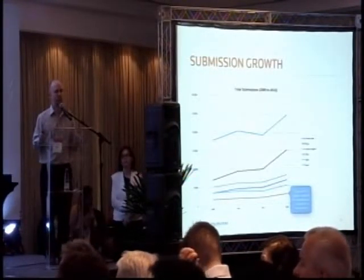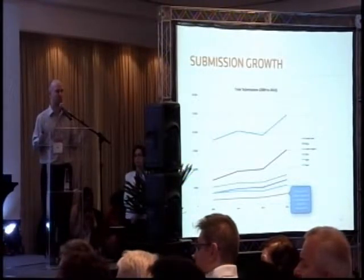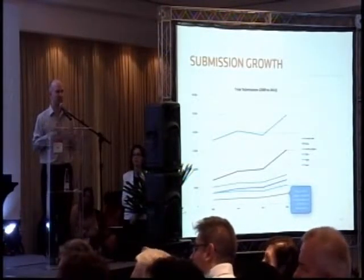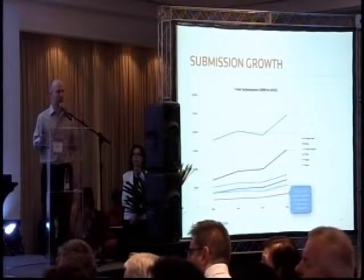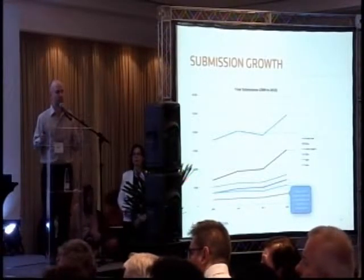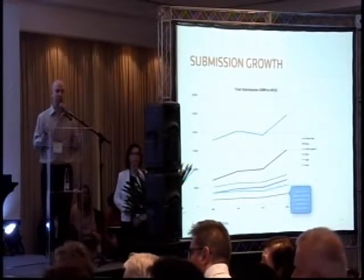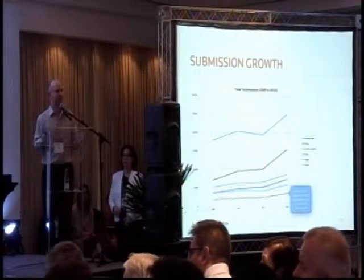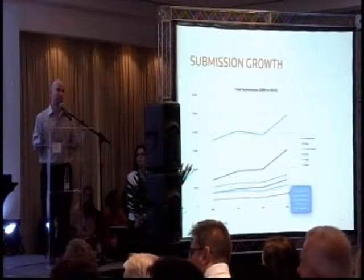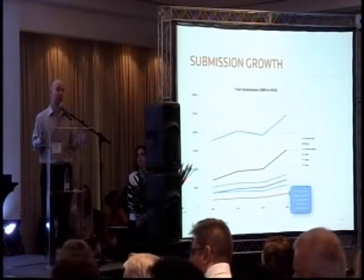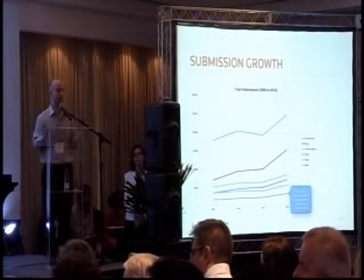Looking at submission growth in Scholar One Manuscripts for the entire world, we see the United States is the biggest contributor to submissions. China is rising quite rapidly behind it. Brazil is in 16th place at the moment — that's not a bad thing. There are 126 countries represented here, and being 16th is good. The trend is up.